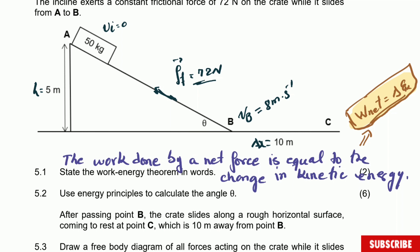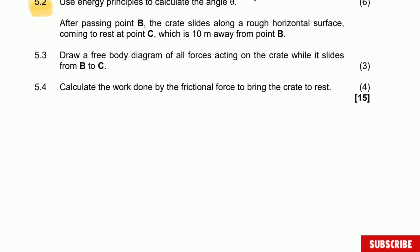Question 5.2: use energy principles to calculate angle theta at passing point B. Most of the time when they ask you to state a theorem or definition at the front, it means you can use it immediately afterwards. So in 5.2 we can actually use the work-energy theorem, working from A to B.